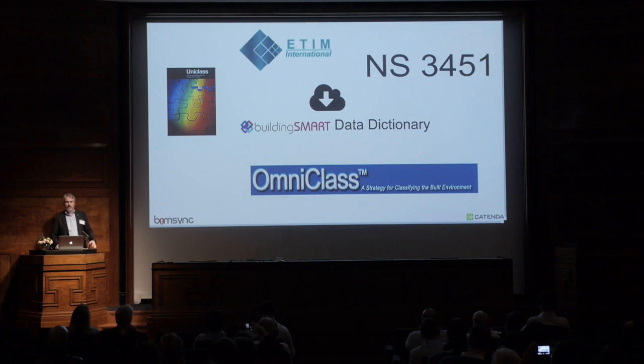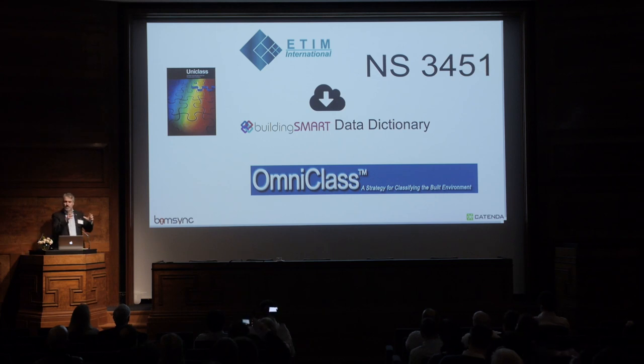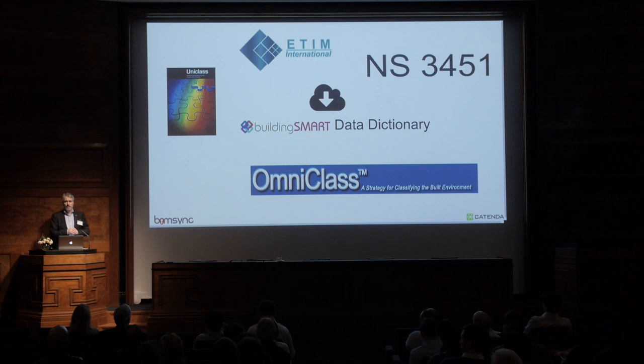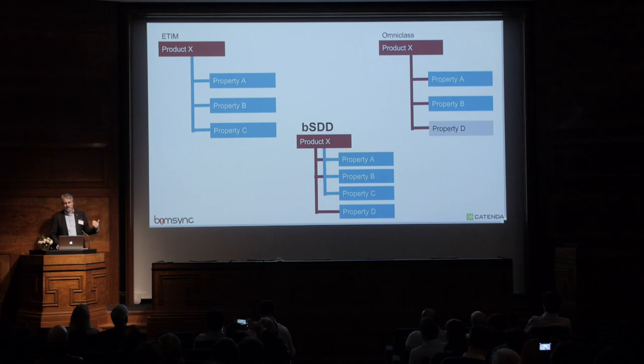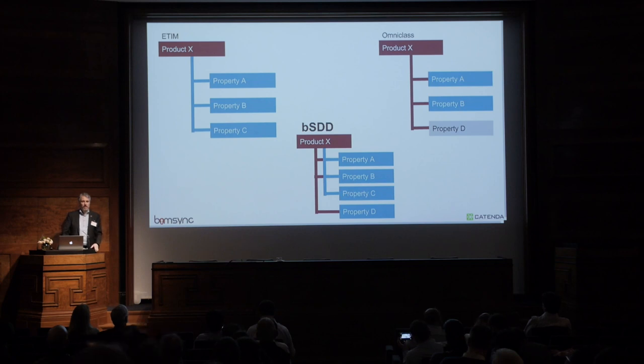There are different classification systems allowing you to see the world a little bit differently — all of these can go into the BuildingSMART Data Dictionary. The BSDD allows for different ways of viewing the world, which means ETIM can say product X has properties A, B, and C, while OmniClass says product X has properties A, B, and D. Nothing is more wrong or correct than the other — it's just different emphasis. The BSDD allows product X to be seen through OmniClass glasses, ETIM glasses, or both.